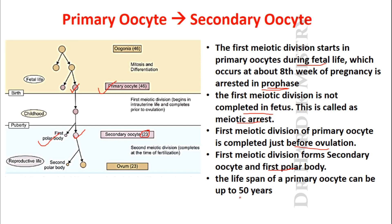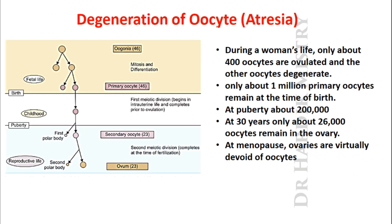The lifespan of a primary oocyte can be up to 50 years. During a woman's life, only about 400 oocytes are ovulated; the other oocytes degenerate - a process known as atresia. Only about one million primary oocytes remain at the time of birth. At puberty, about 200,000 remain, and at the age of 30 years only about 26,000 oocytes remain in the ovary.